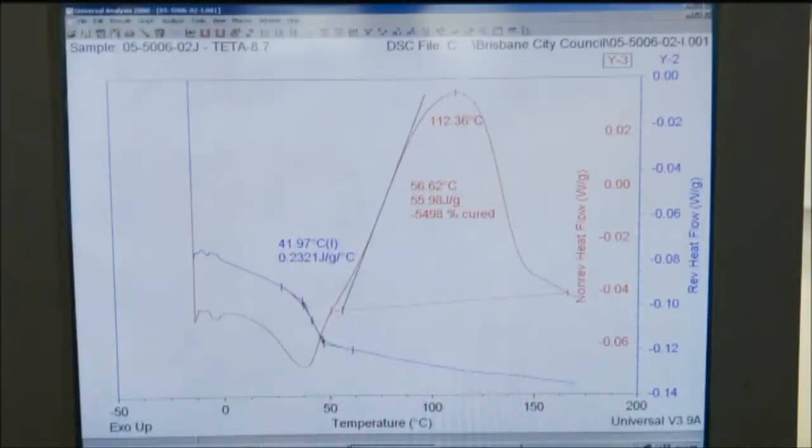The glass transition temperature, Tg, is the temperature at which an amorphous solid becomes brittle on cooling or soft on heating.